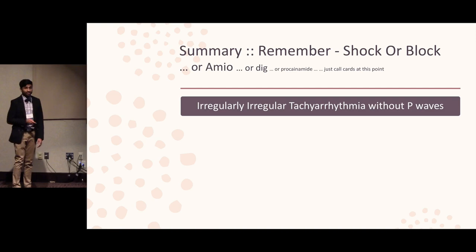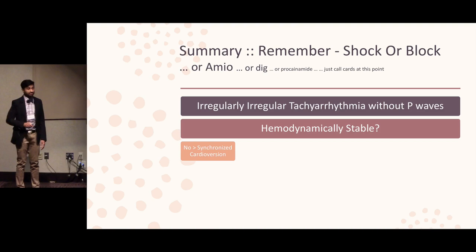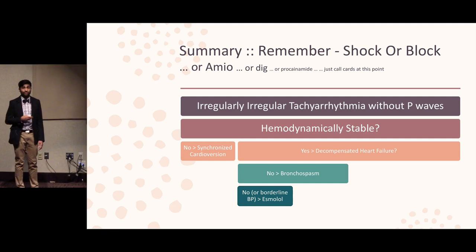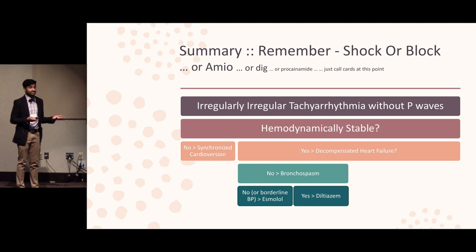In summary: if you have a patient with a confirmed irregularly irregular tachyarrhythmia, make sure of one thing — are they stable or not? If they're not, go ahead and shock them. If they are, then you have time to block them. Make sure they don't have heart failure and don't have significant bronchospasm before giving a beta blocker. If there is significant bronchospasm, you can consider diltiazem. If they do have heart failure, make sure to check thyroid function before going to amiodarone. And last but not least, you can consider digoxin, or just call us.